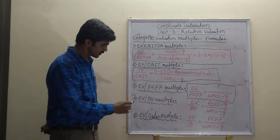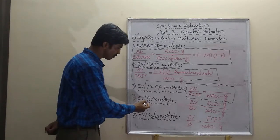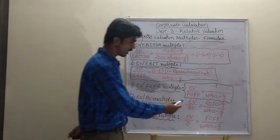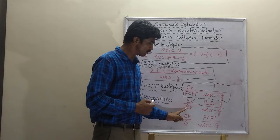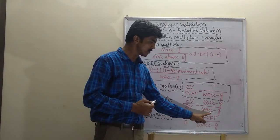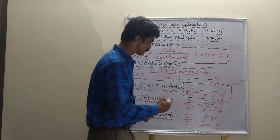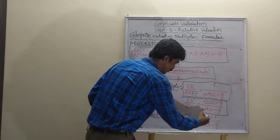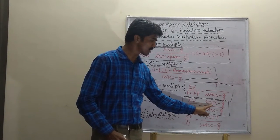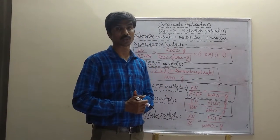Now move on to the fourth one, that is EV to BV multiple, wherein EV stands for enterprise value and BV stands for book value of shares. The ratio of these two is calculated using the formula: EV to BV multiple is equal to (ROIC minus G) divided by (WACC minus G). Wherein ROIC stands for return on invested capital, G stands for growth rate, and WACC stands for weighted average cost of capital.